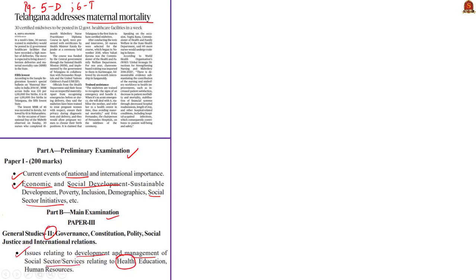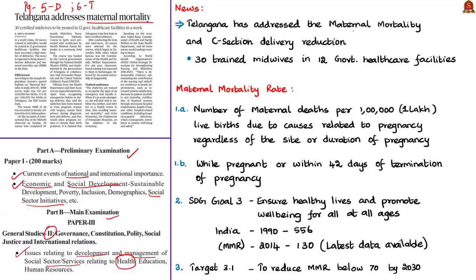In mains syllabus, it is important under GS Paper 2 in the area of issues relating to development and management of social sector or services relating to health. The news article talks about Telangana state addressing the maternal mortality rate and C-section delivery reduction, done by posting 30 certified midwives in 12 government healthcare facilities that have recorded a high number of deliveries. C-section means cesarean section, where a child is delivered through surgery.